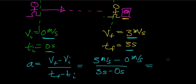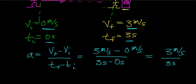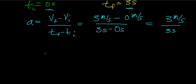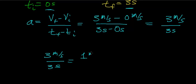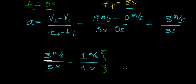When you simplify this, you get 3 meters per second divided by 3 seconds, which further simplifies to 1 meter per second per every 1 second. Dividing 3 by 3 gives 1. So this tells us that the velocity of the object increases at a rate of 1 meter per second every single second that this person is accelerating.